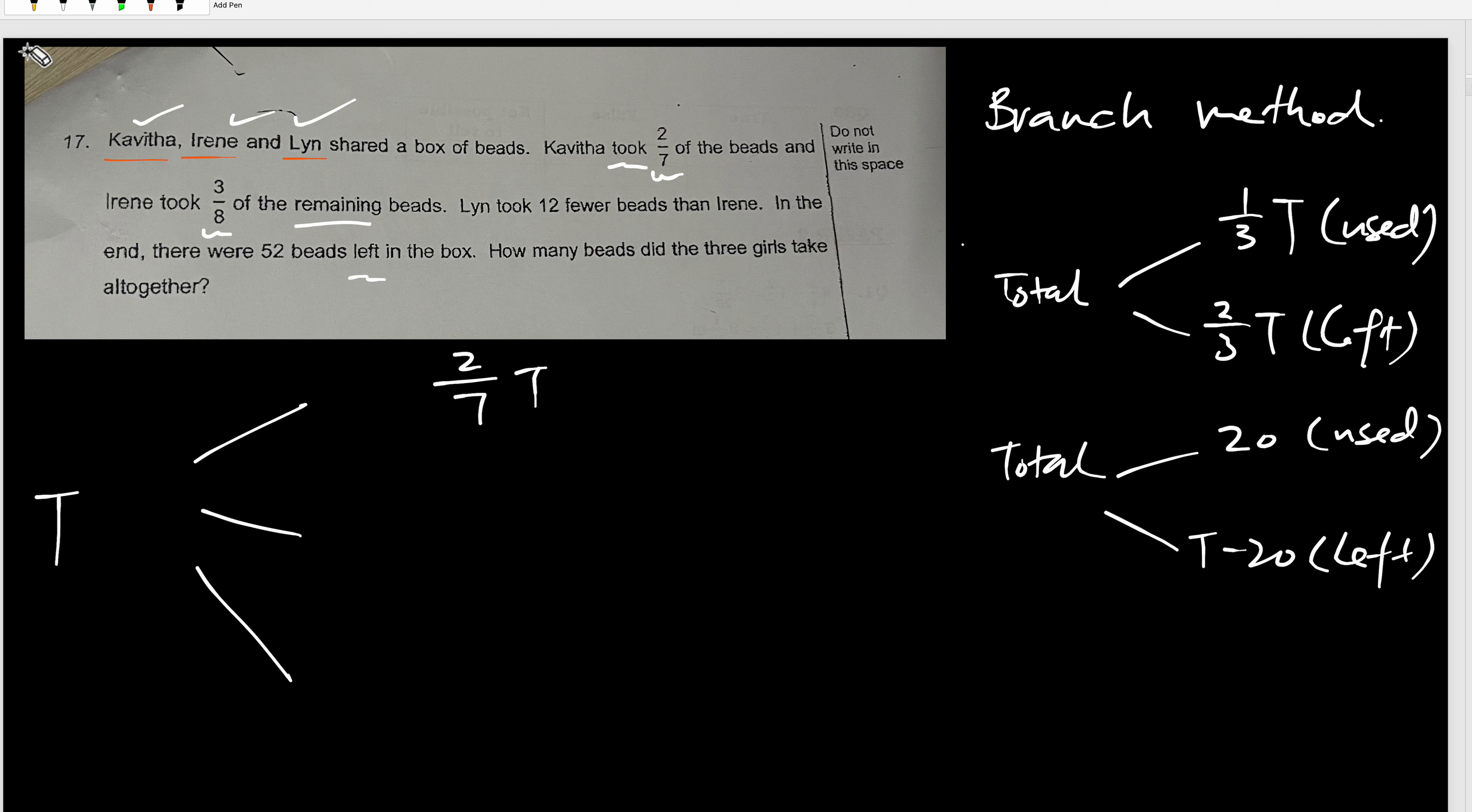So I write the K, I, L at the back. This is K, this is I, this is L. So 2/7 of T is K because of this. And now, they say Irene took 3/8 of the remaining. So I need to get the remaining first before I go to Irene. I cannot write 3/8 T is Irene. Do you know why? The meaning of this is 3/8 of the total, but the question says it's 3/8 of the remaining.